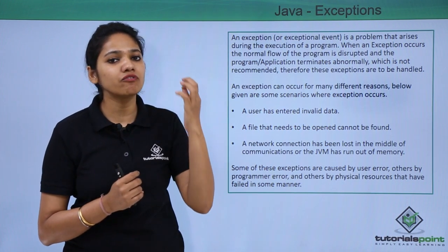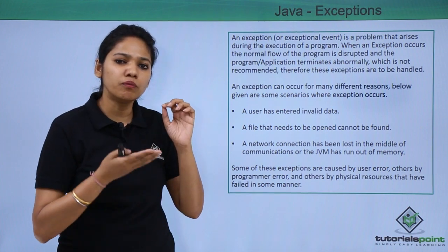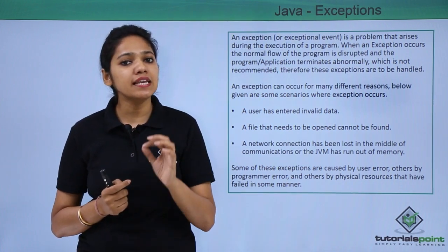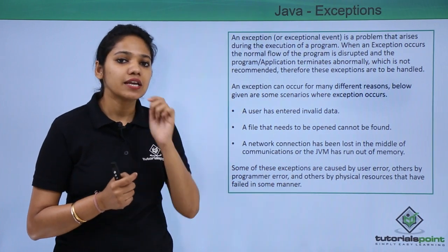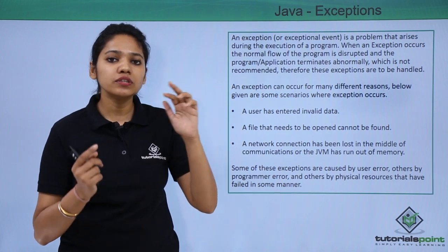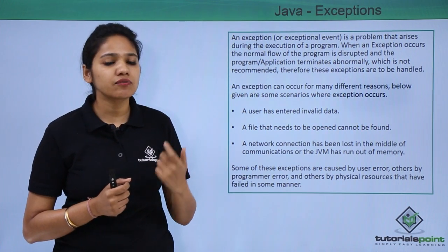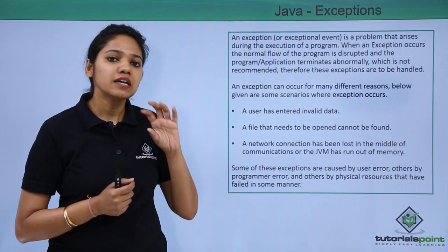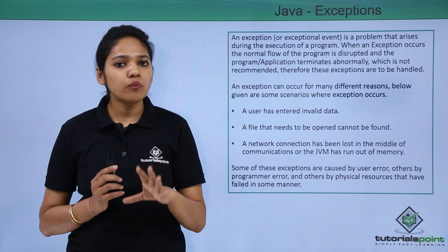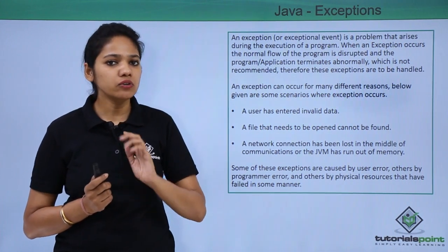Once the method where the exception object was created is identified, it starts traversing the stack from bottom to top, looking for an exception handler. The key point is that the type of exception must match the type of the exception handler — both types should be the same. Once the exception and the matching exception handler are found, the exception is handled. If no exception handler is found for a particular exception, the program terminates.